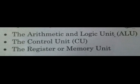The three parts are the arithmetic and logic unit (ALU), the control unit (CU), and the register or memory unit (MU). The arithmetic and logic unit is used to do all arithmetic calculations and to compare numbers. It can add, multiply, subtract, and divide numbers, and compare numbers to find out if a number is equal to, greater than, or less than another number. The control unit controls and manages the flow of information between different parts of the computer.